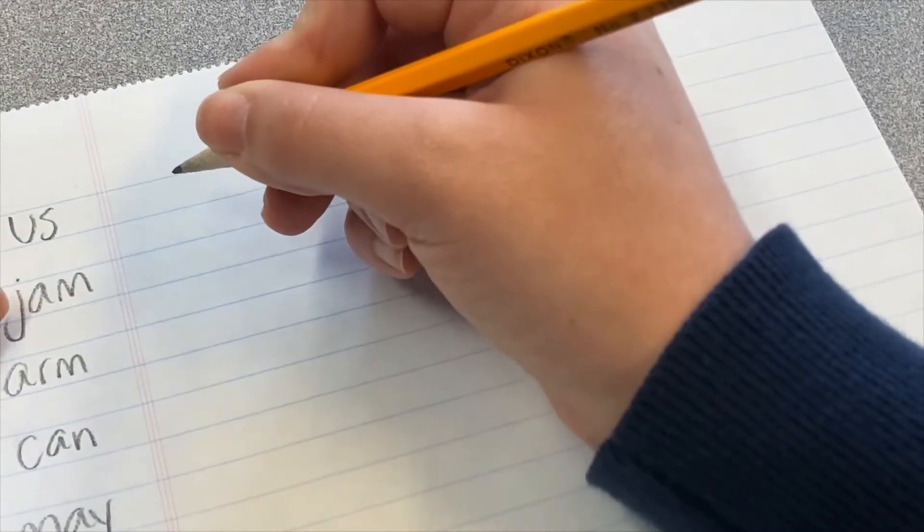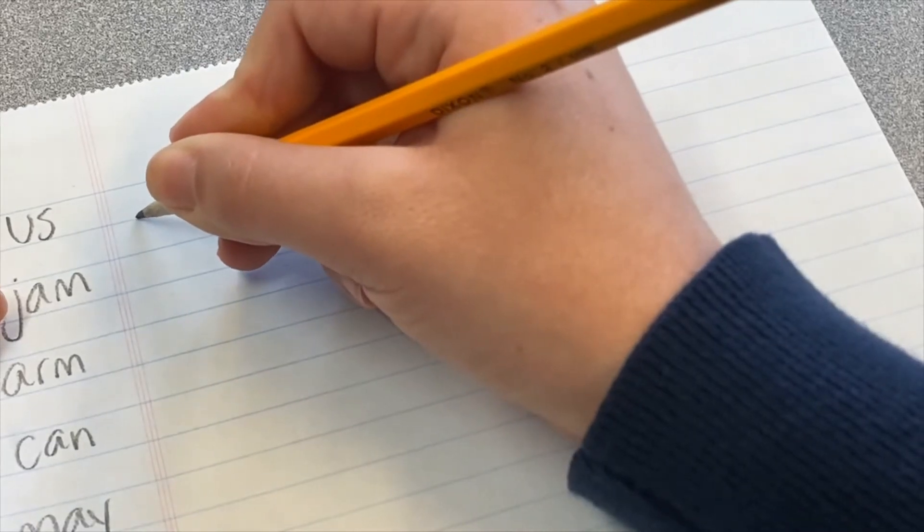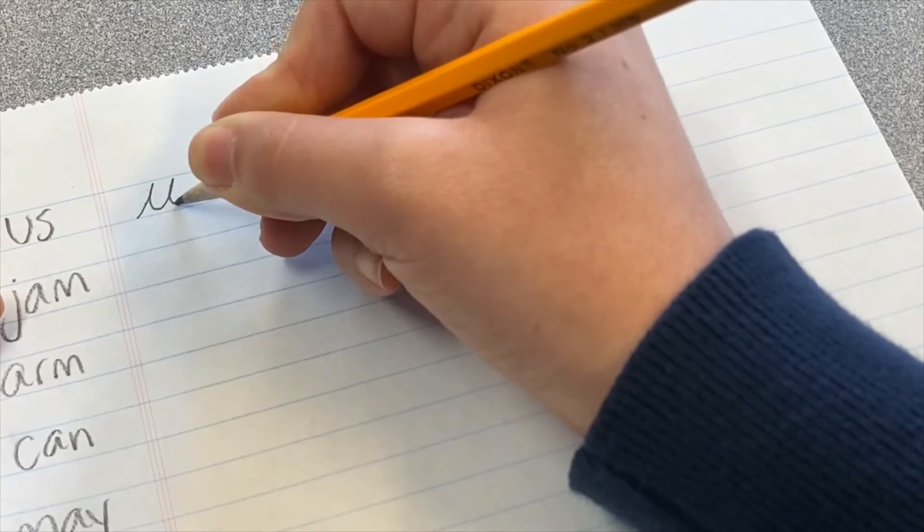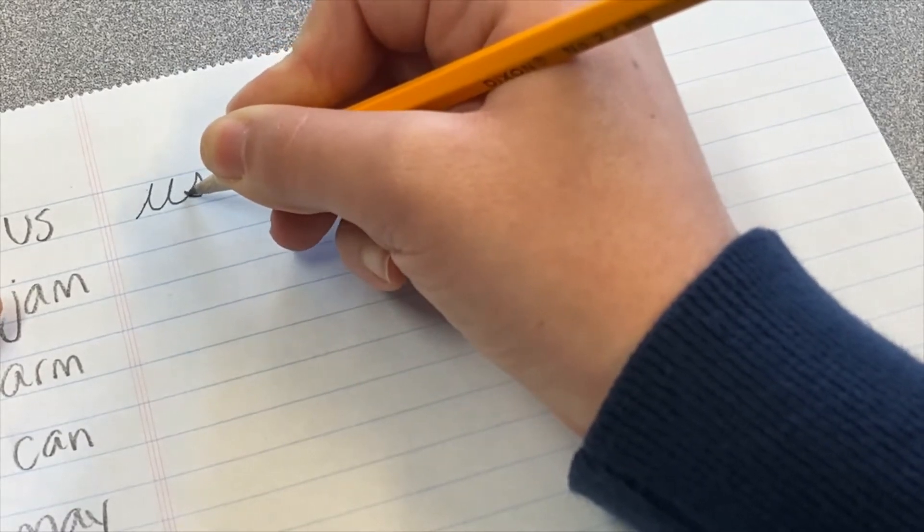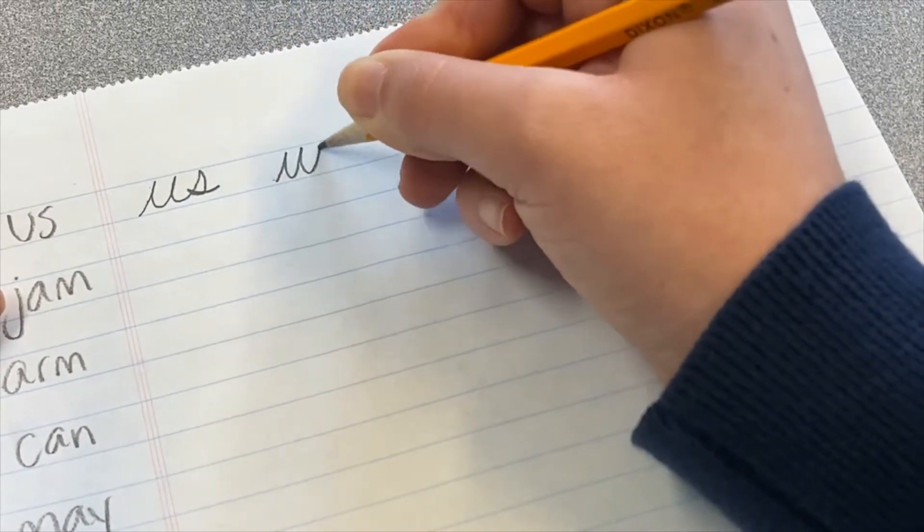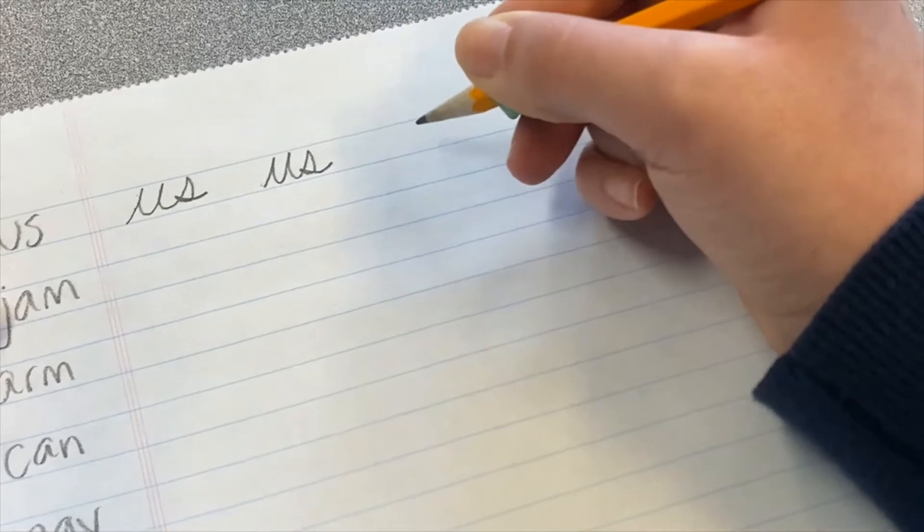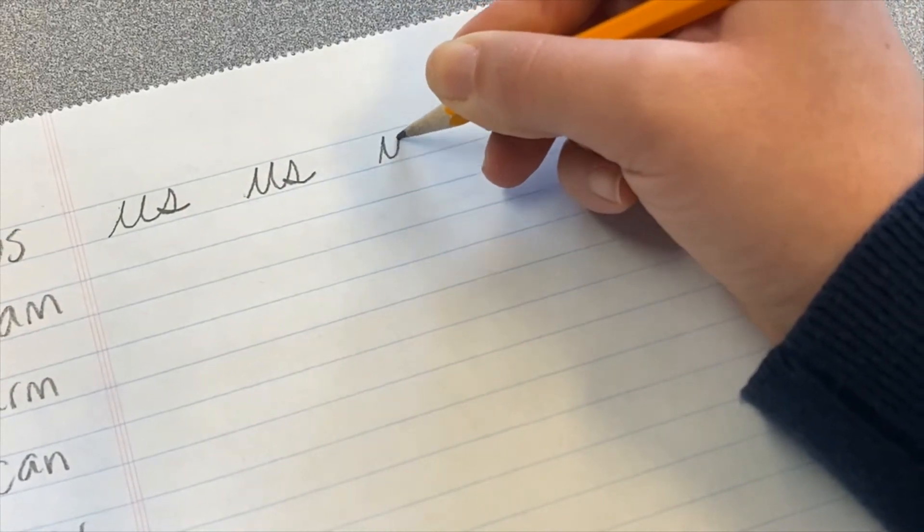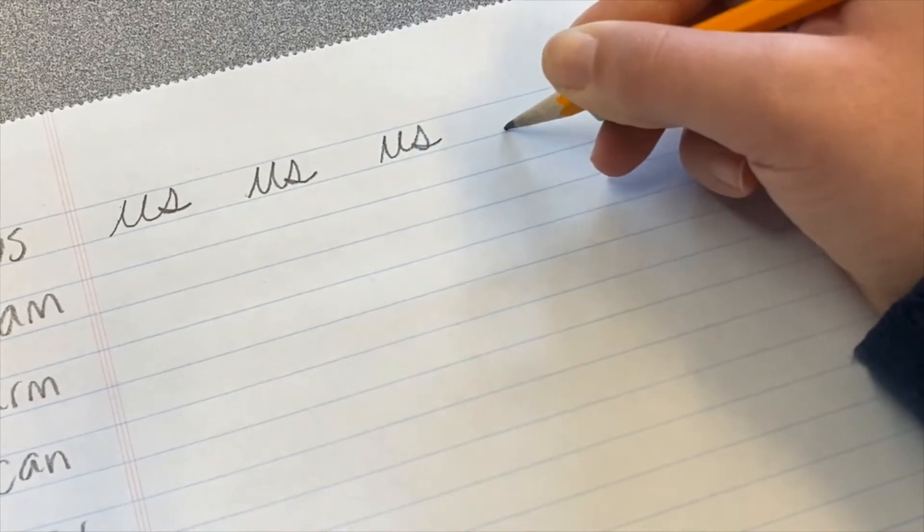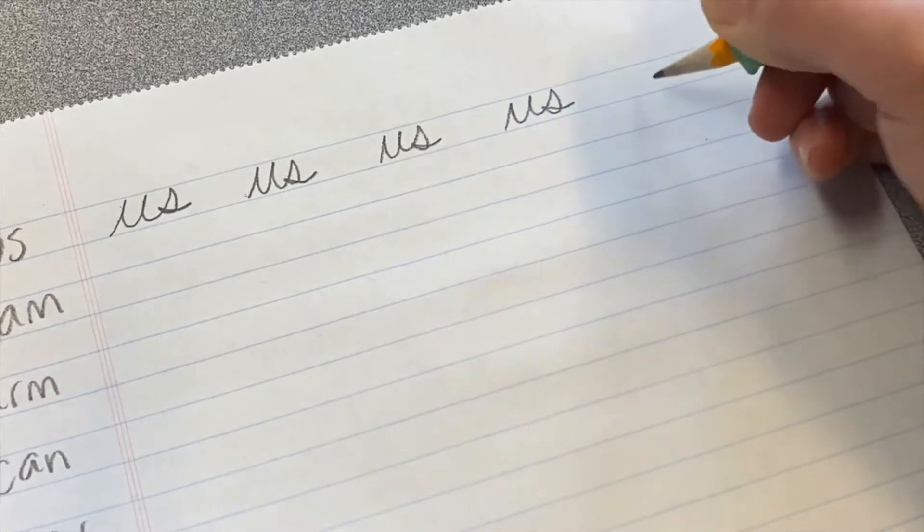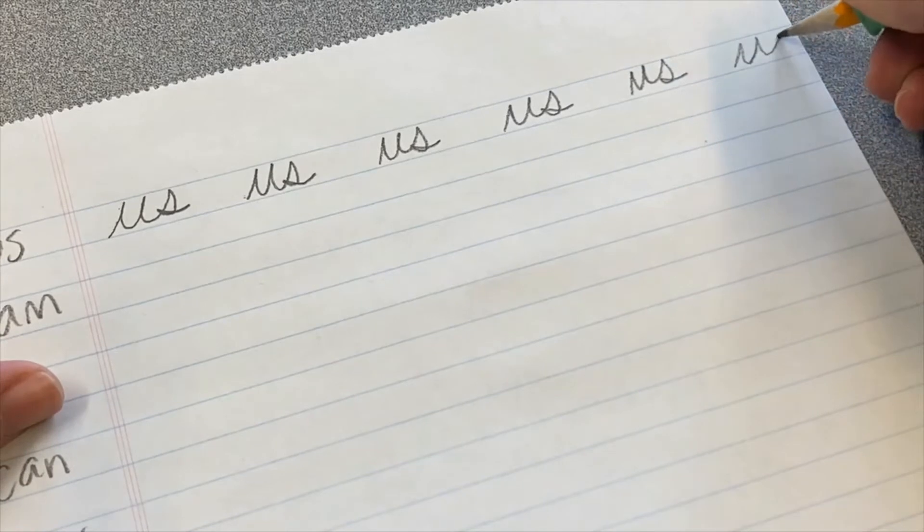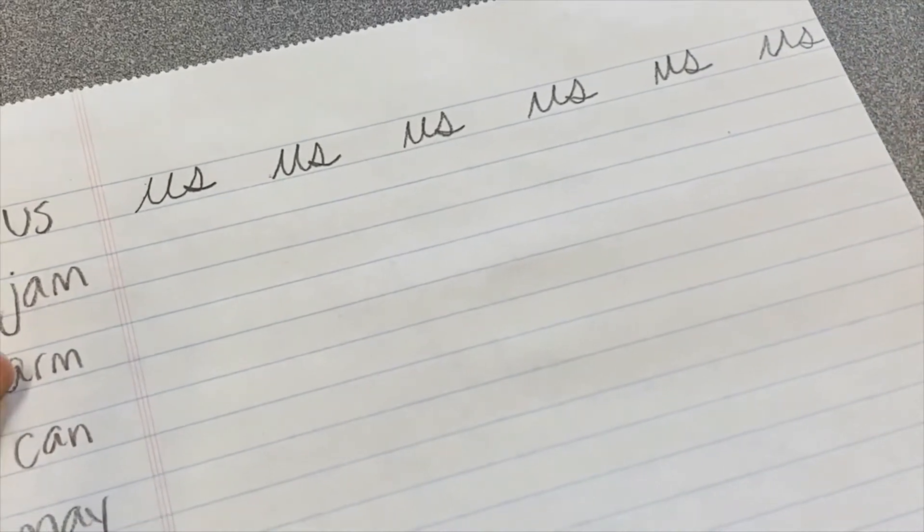The first word we'll learn today is the word us. So do a cursive U and we'll bring it down and go right into the cursive S. Up, around, in, and out. It's like that sailboat. Making the U, sliding up, up, down, and right into the S. In, out. And there you have the word us.